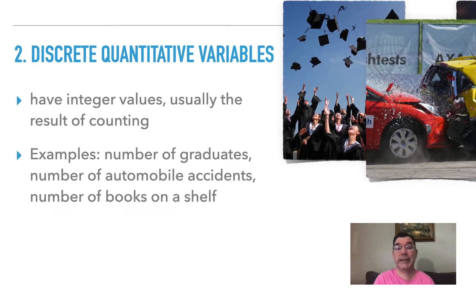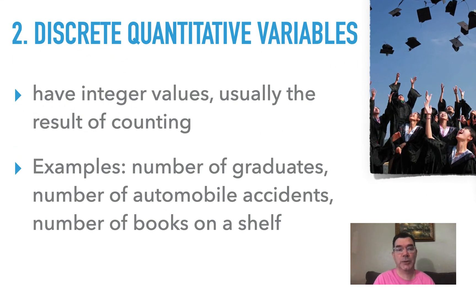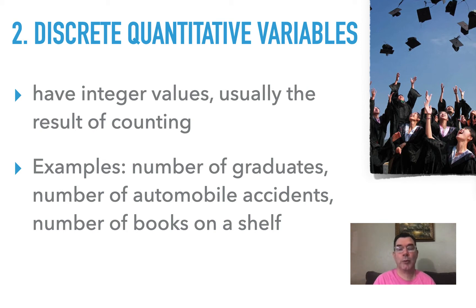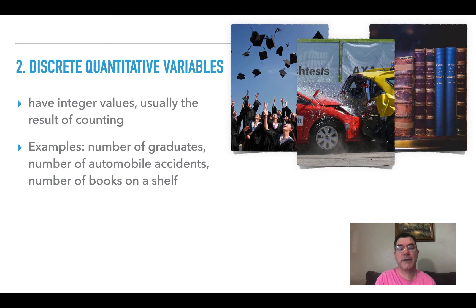Then we have discrete quantitative variables. These are variables that are numbers, but they take on integer values and it's usually the result of counting something. That's what discrete means — it only takes on integer values with no decimals or fractions. For example, we could have the number of graduates of a high school year after year, the number of automobile accidents in a city month after month, or the number of books on a shelf in a library. All of those are going to take on integer values, not decimal or fraction values.